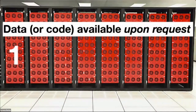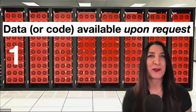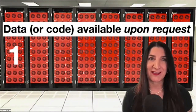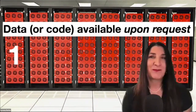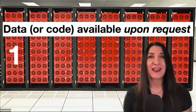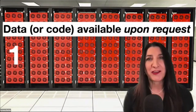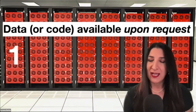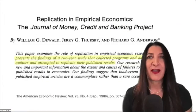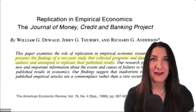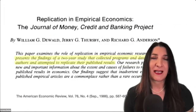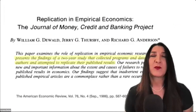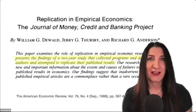The first one — my first favorite — is 'data or code available upon request.' You may know that initiatives to require authors to submit data with their manuscript are decades old. There's a classic example: the Journal of Money, Credit, and Banking launched an NSF-supported project in 1982 which targeted data storage and evaluation.